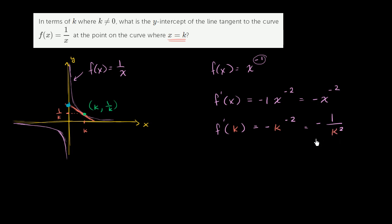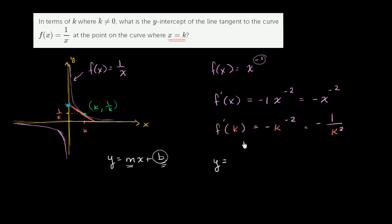Now let's think about what the equation of the tangent line is in slope-intercept form. We know the equation of a line in slope-intercept form is y equals mx plus b, where m is the slope and b is the y-intercept. If we can get it in this form, then we know our answer — the y-intercept is going to be b. So we can say y equals our slope of the tangent line when x equals k — which we just found to be negative 1 over k squared — times x, plus b.